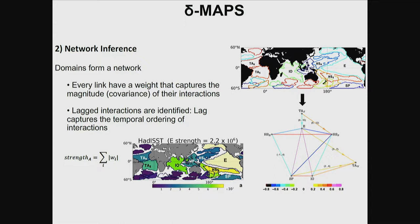You can define a strength for each domain, which depends on the sum of all the links — all the interactions that domain has with everybody else. If you take SST and define the strength for all identified domains, the one corresponding to ENSO will be the strongest, because it's the domain most teleconnected with everything else. You can also plot how those domains interact, shown in the network plot on the side.